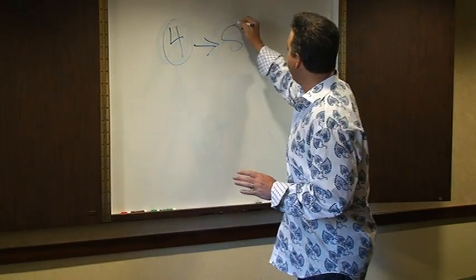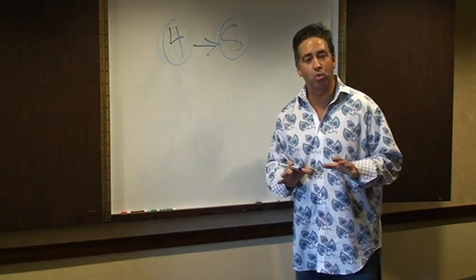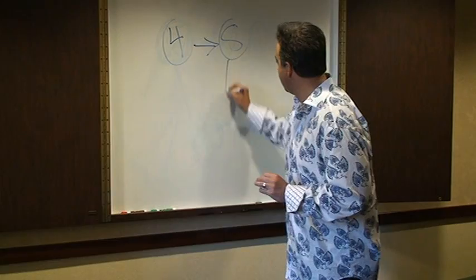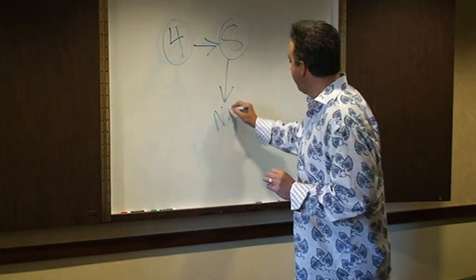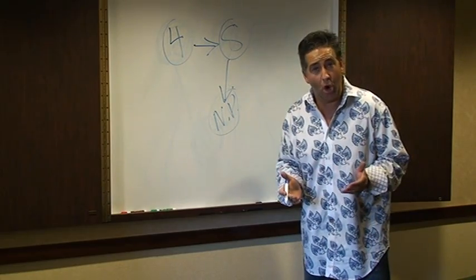The second part of the math equation is you have to have eight separate individual conversations every single day with new prospects. New prospects means people that don't know you, people that have no idea who you are.